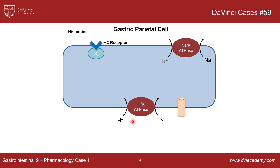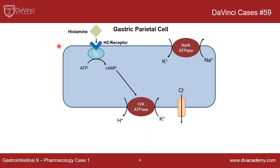This is how you get acid into the stomach lumen. You also have chloride channels which pump chloride into the lumen, forming hydrochloric acid, or HCl, which helps break down digested products in the stomach. There is also a histamine H2 receptor which binds histamine, stimulating a G protein coupled receptor (Gs), which then stimulates the conversion of ATP to cyclic AMP. Cyclic AMP actually stimulates the hydrogen potassium ATPase.